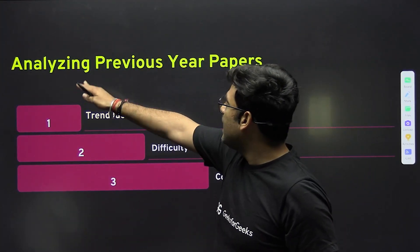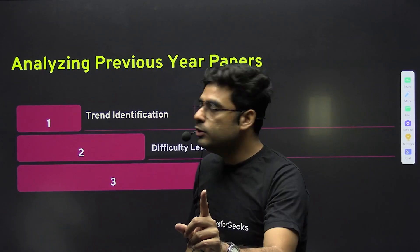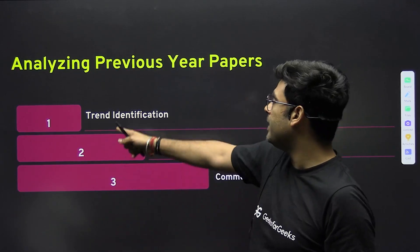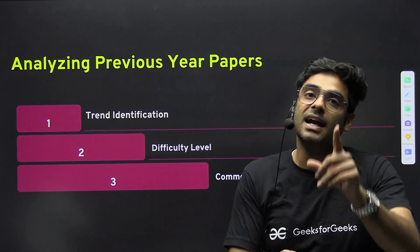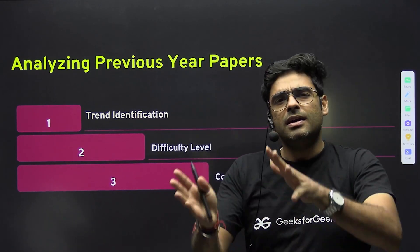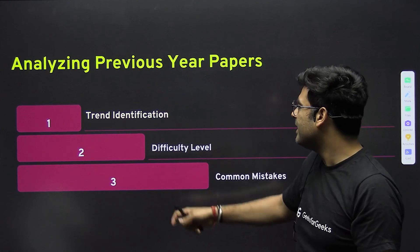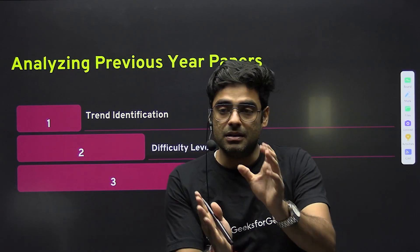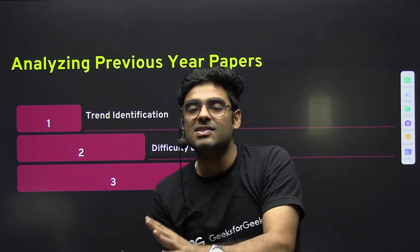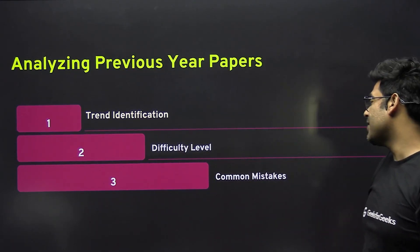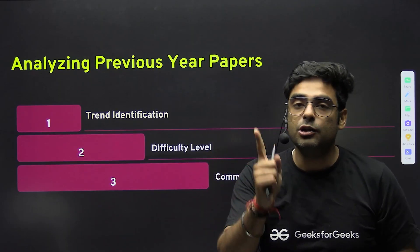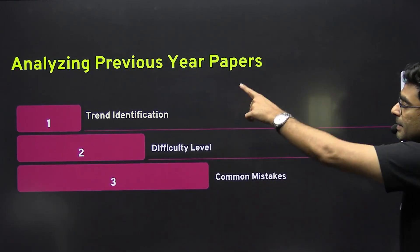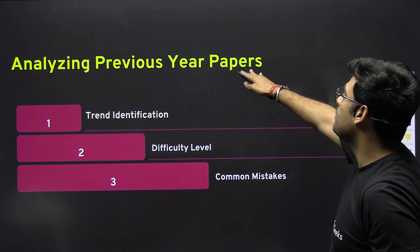After that, analyze previous year papers. You need to identify the trend — what concepts are majorly and repeatedly asked. Trend identification is a skill you acquire after solving 100, 200, 300 questions — gradually you understand how the trend is changing and which questions repeat. Also check the difficulty level of questions from each subject. Another key point is avoiding common mistakes, especially calculation errors, which you must consciously avoid.